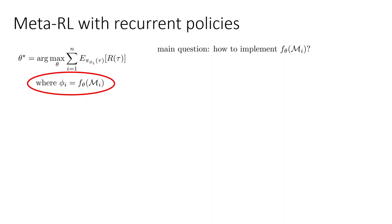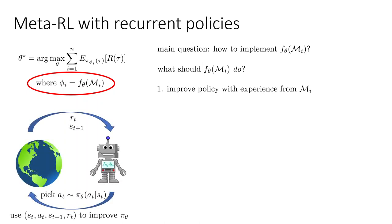So let's try to make this a little more concrete. Let's try to actually instantiate this idea. And instantiating this idea basically amounts to implementing f_θ(M_i). Implementing an encoder that will read in everything you've experienced in the MDP M_i and inform your policy how to act. What should f_θ(M_i) do? It needs to improve the policy with experience from M_i. So it needs to read in that experience and help the policy do better. And it also needs to choose how to interact. And this is different from supervised learning. In supervised meta learning, we don't have to deal with this. But in meta reinforcement learning, we have to also be smart about choosing how to explore in the MDP M_i, how to actually choose the actions.